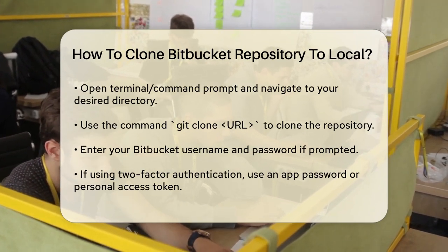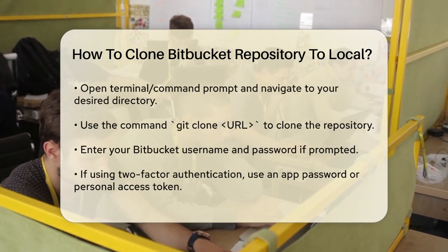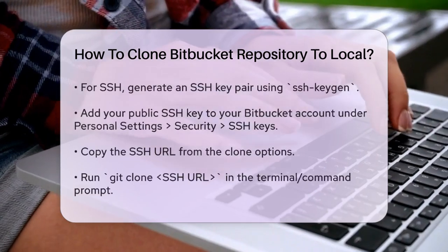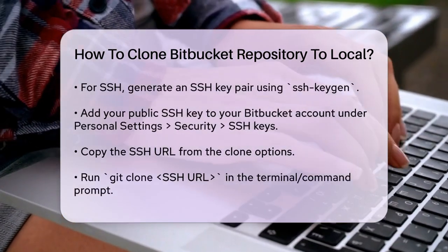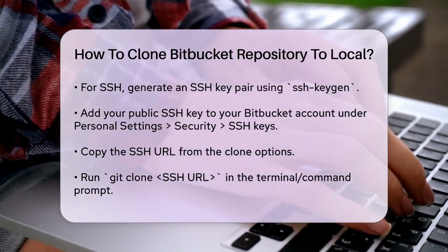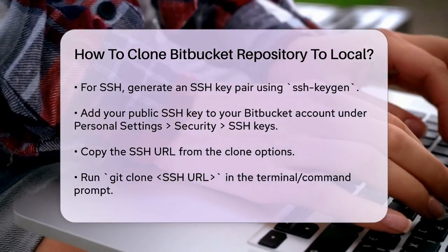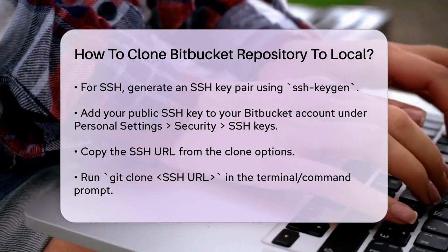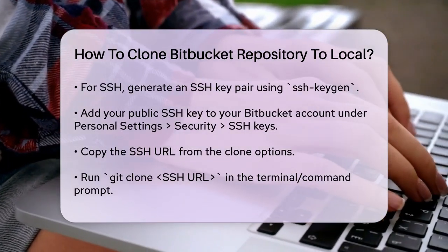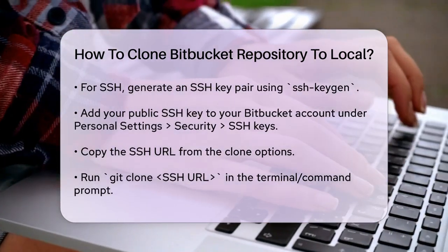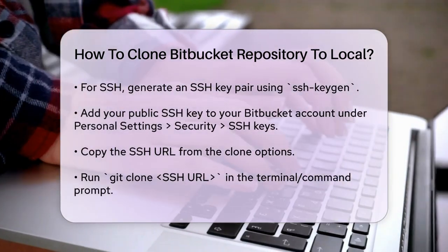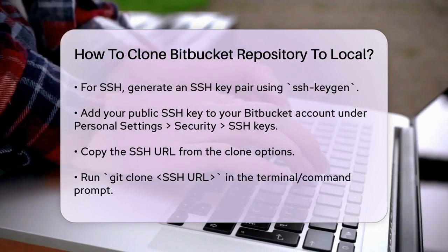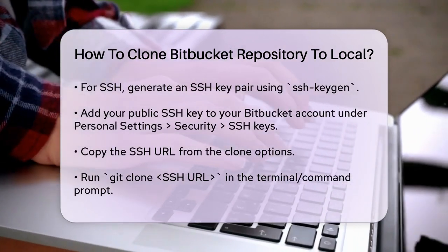Next, add your public SSH key to your Bitbucket account. Copy your public SSH key from ~/.ssh/id_rsa.pub. Log in to your Bitbucket account, go to Personal Settings, and under the Security section, click on SSH Keys. Add your key and save it.